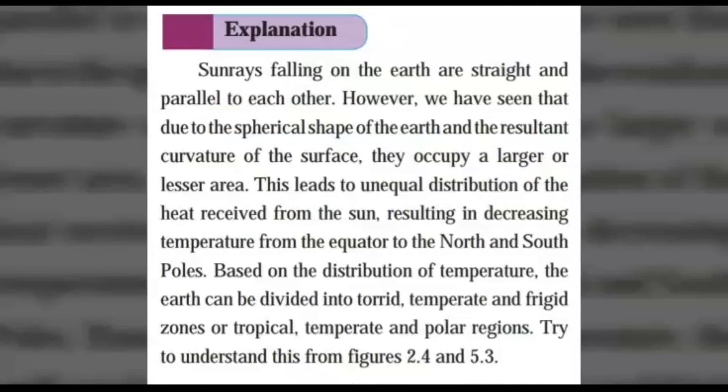Explanation of this activity. Sun rays falling on the earth are straight and parallel to each other. You can observe this in the given diagram. However, we have seen that, due to the spherical shape of the earth and the resultant curvature of the surface, they occupy a large or lesser area. This leads to unequal distribution of the heat received from the sun. Resulting in decreasing temperature from the equator to the north and south poles. Based on the distribution of temperature, the earth can be divided into torrid, temperate, and frigid zones, or tropical, temperate, and polar regions.